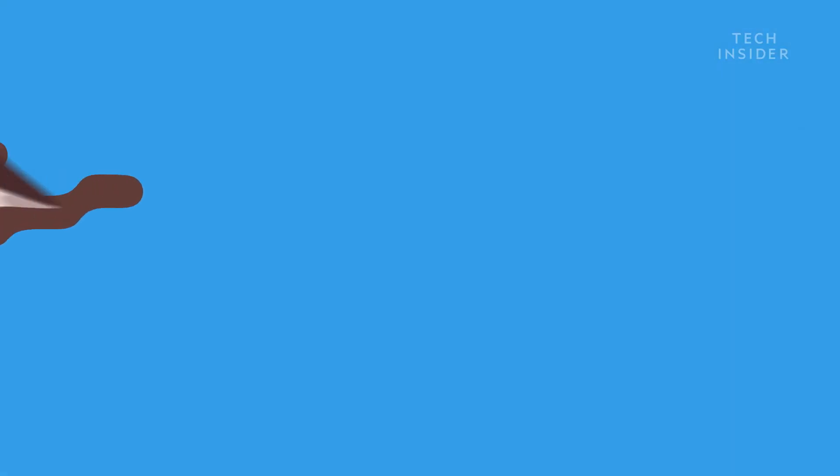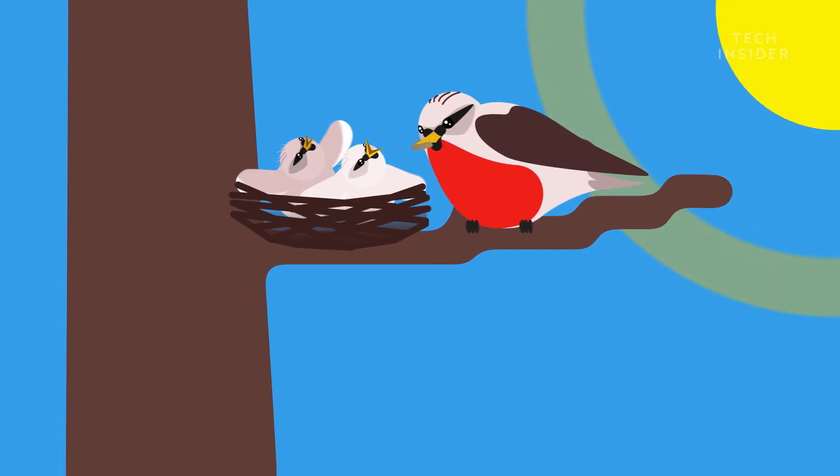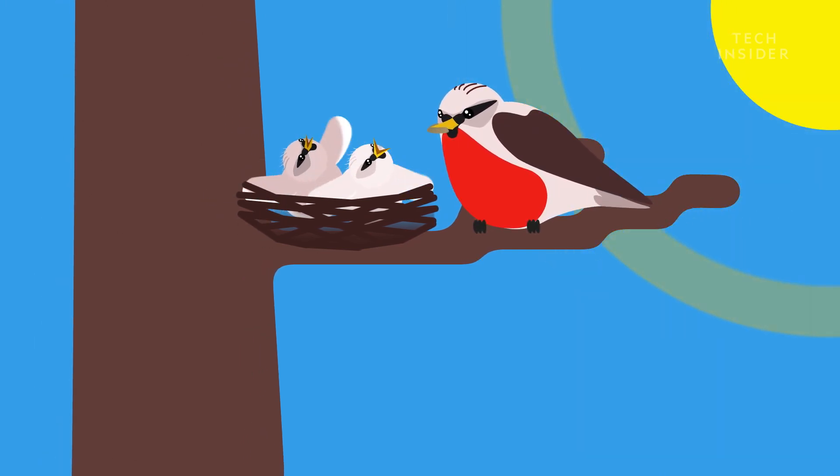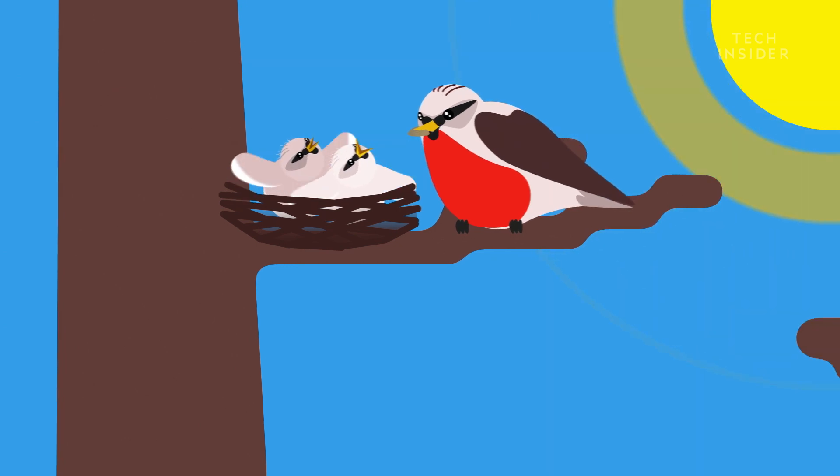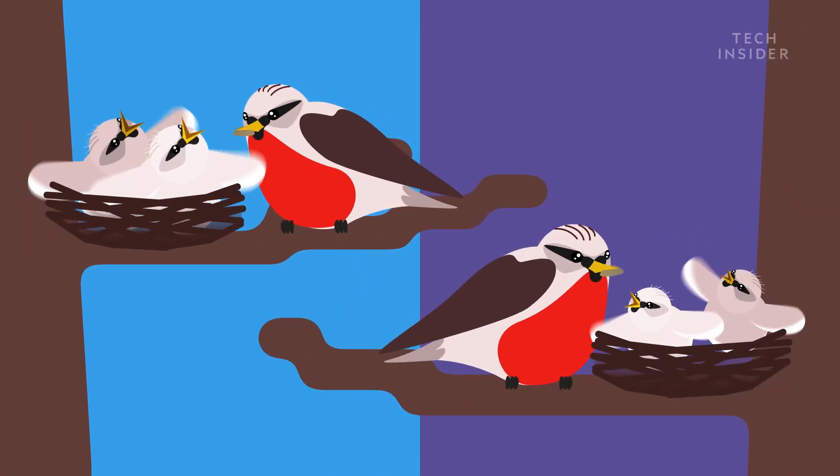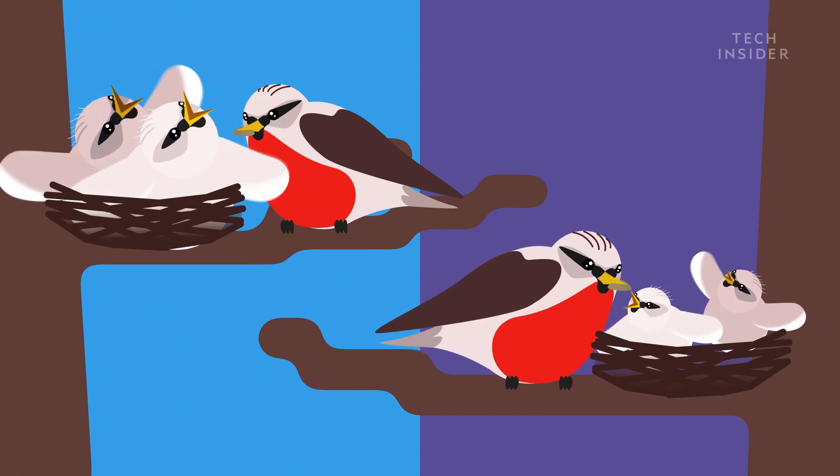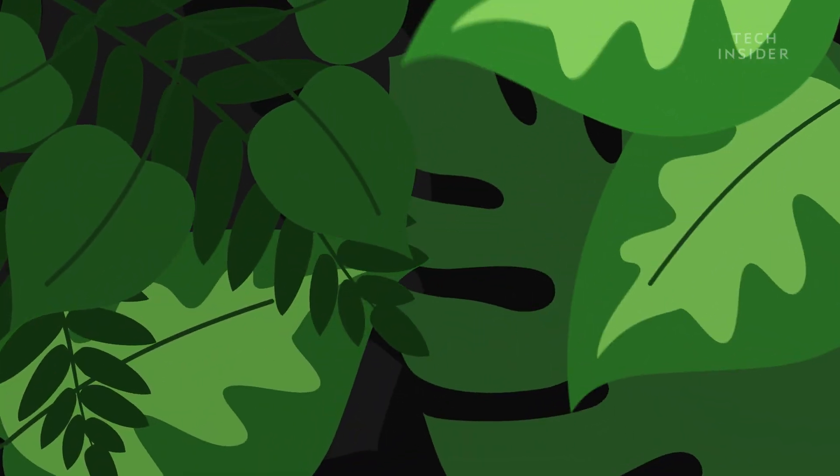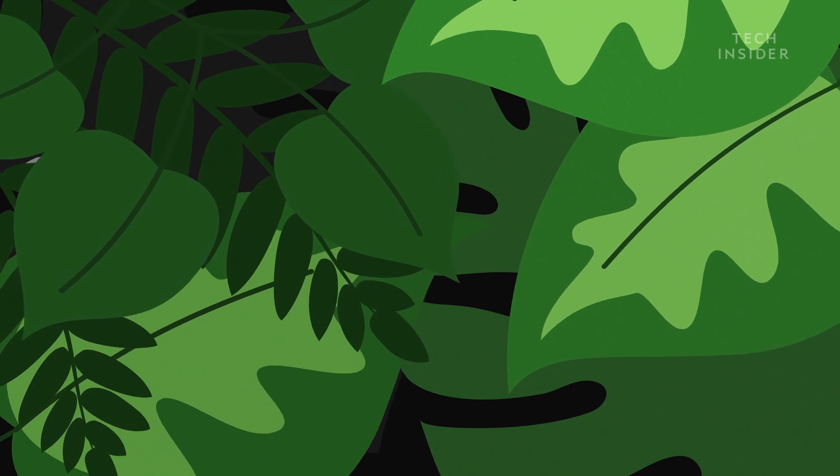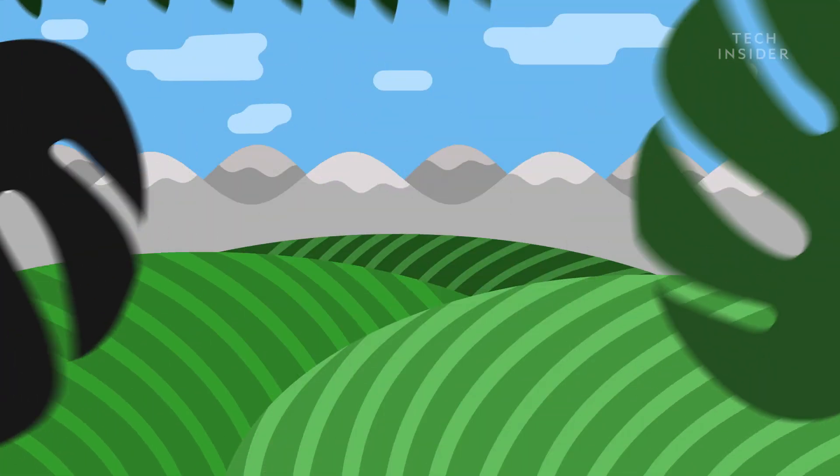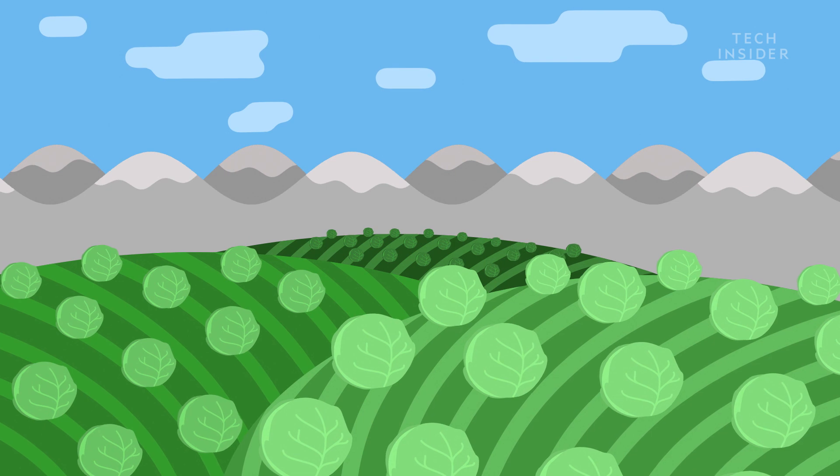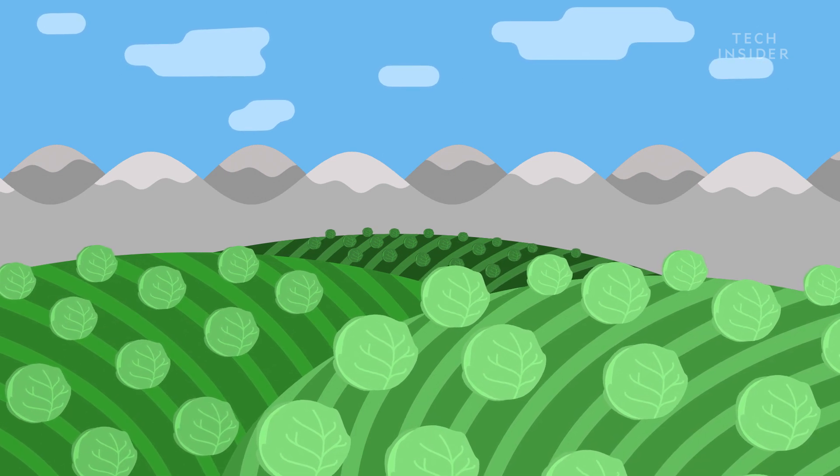At first, animals would take advantage of the extra light to find and eat more food. Just like Alaskan birds, which feed their chicks extra nutrition in the summer, resulting in faster-growing babies than their southern counterparts. And plant growth would explode since they get their energy directly from sunlight. Farms in Northern Alaska, for example, grow cabbages the size of Rottweilers in the summer.